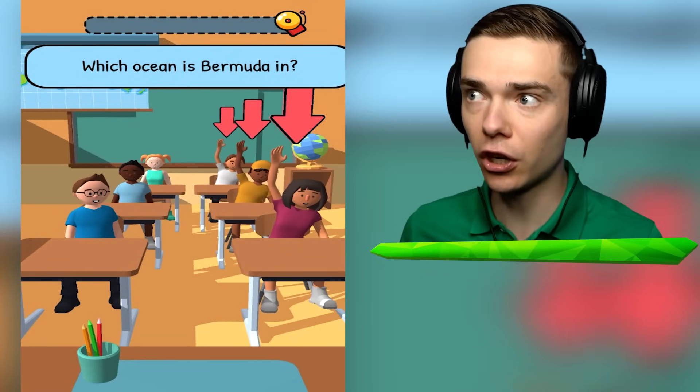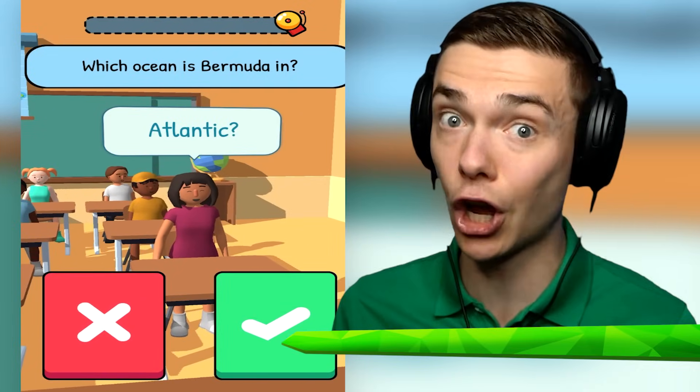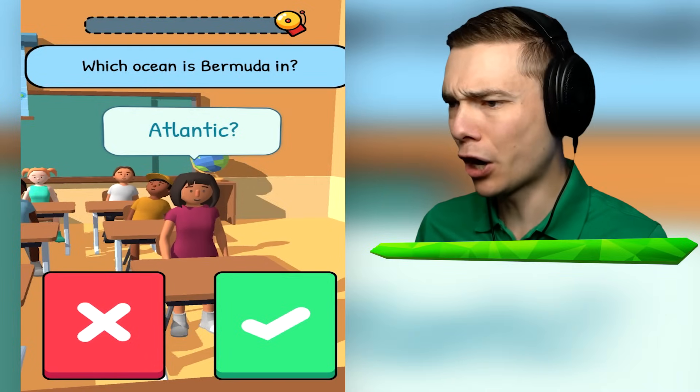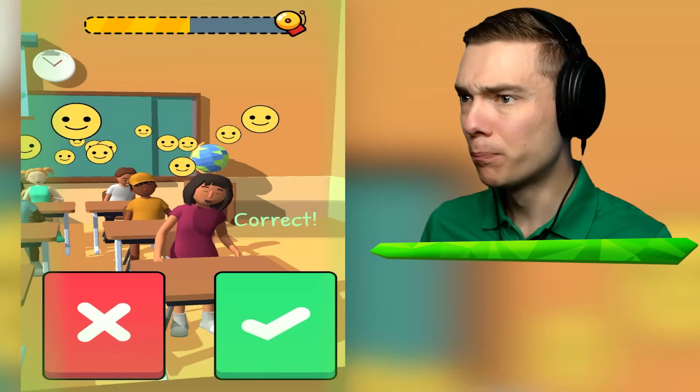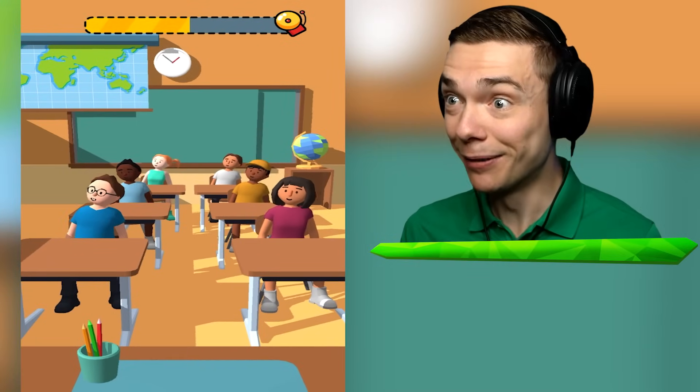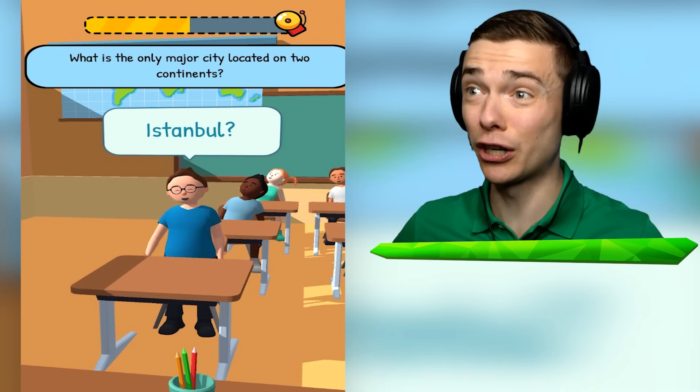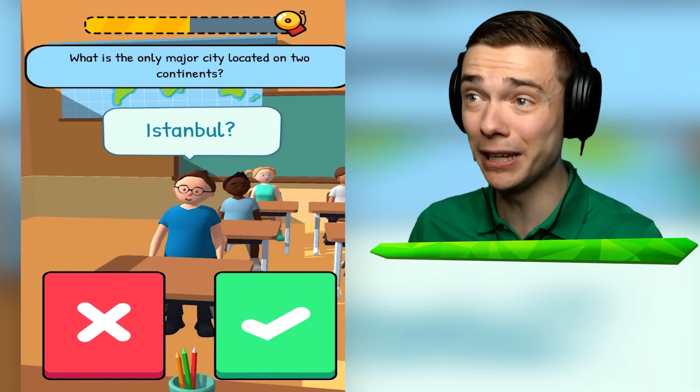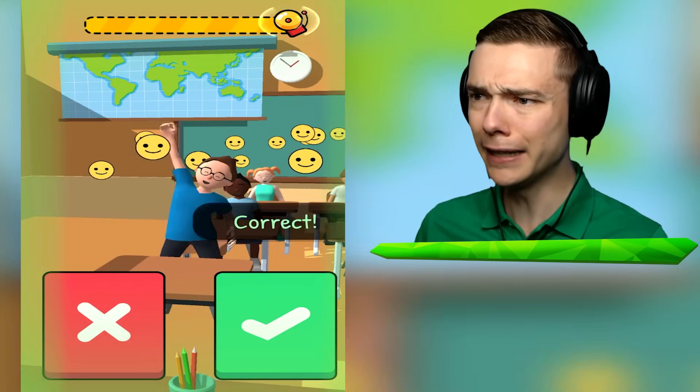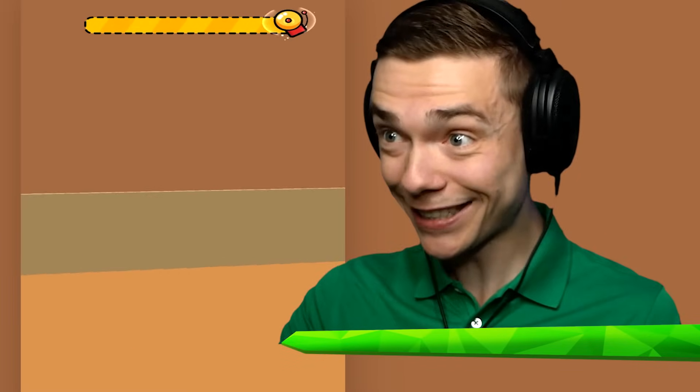And because these students are now super smart instead of super dumb, we can unlock a secret class. Atlantic Ocean? I don't know what your name is, lady, but that is correct. Oh, awesome. What is the only major city located on two continents? These questions are super hard. And Timmy actually got it right. Look at that. He is smart. Let's go, Timmy.